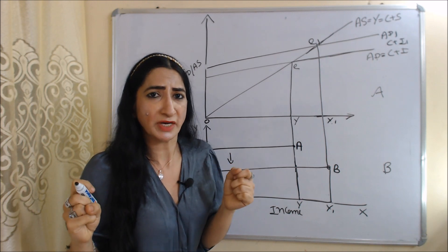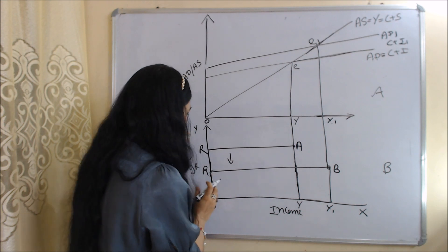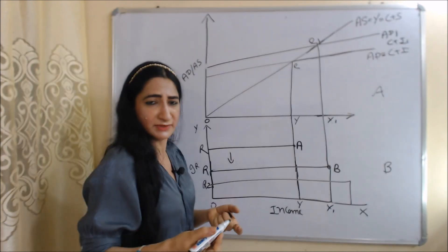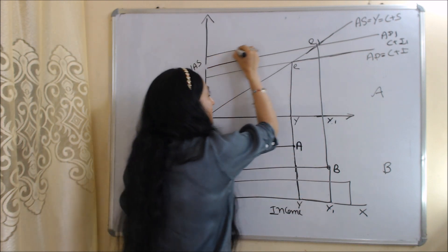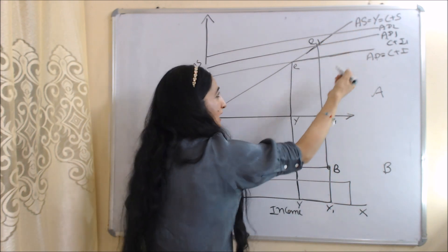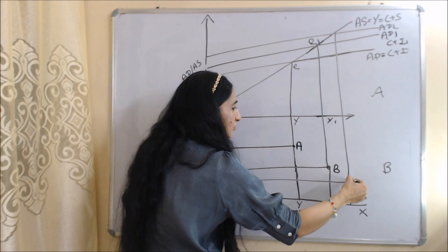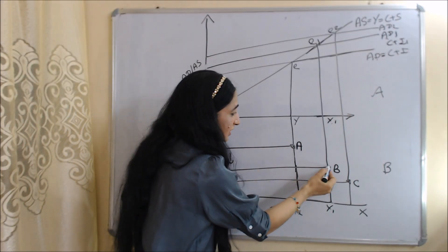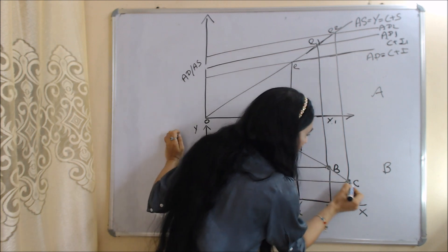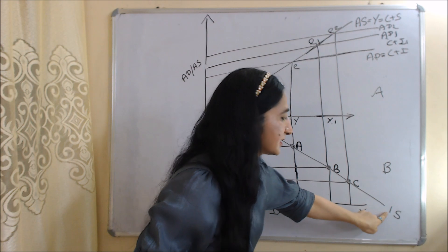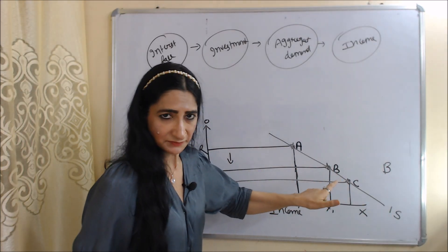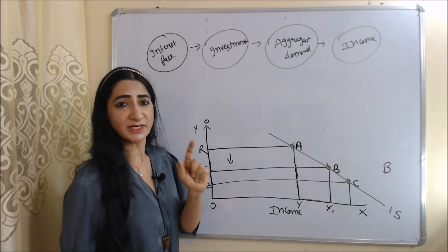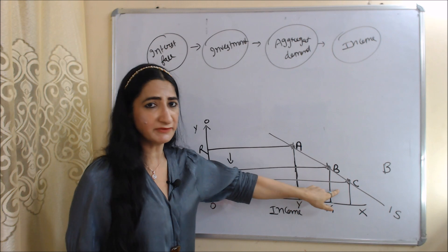Suppose interest falls further from OR1 to OR2 — that means investment will increase more. As investment increases, the aggregate demand curve shifts forward from AD1 to AD2. As aggregate demand increases, income will also increase, and another new equilibrium point is E2 in diagram A, and C is the new equilibrium point in diagram B. We now have three equilibrium points A, B, and C. When we join all these points, we get our IS curve, which shows various combinations of interest rate and income describing equilibrium within the goods market.